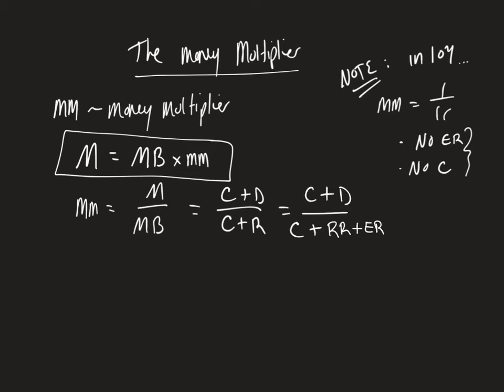Now, the way that we are going to create this money multiplier in 304 is we are going to do a little bit of a math trick that helps out. So we're going to multiply the top and the bottom by 1 over D, which equals 1. So I can legally do that.